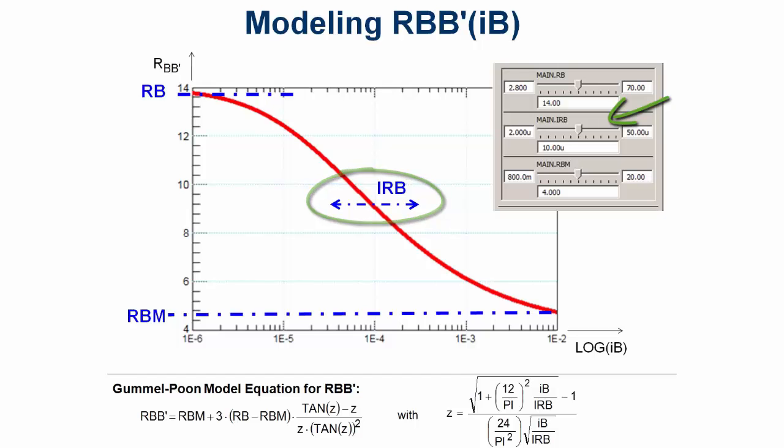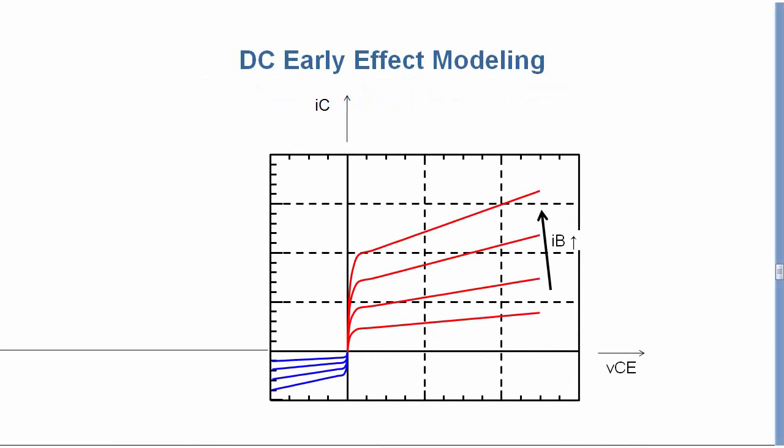We are now ready to start the non-linear DC modeling. We begin with the early voltages, since they affect the base charge and therefore the whole Gummel-Poon model. This is especially true if the early voltage values are small.